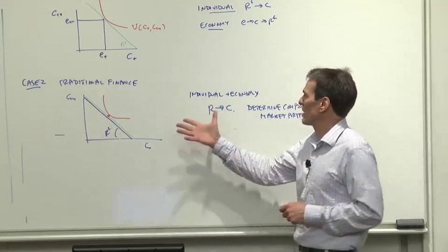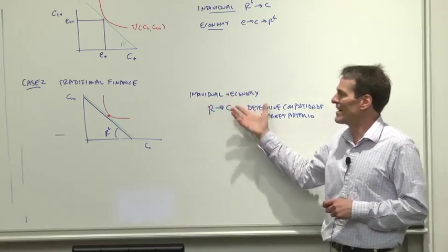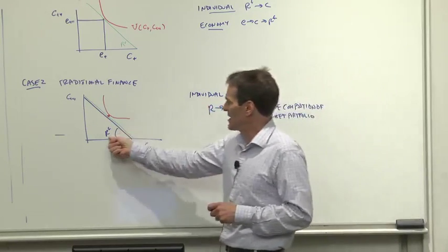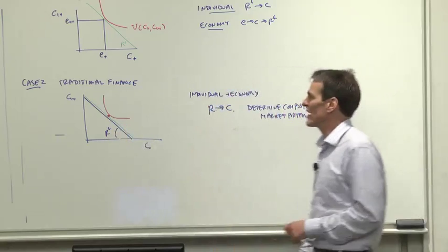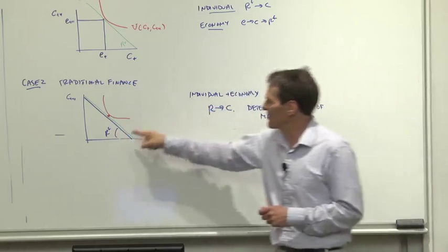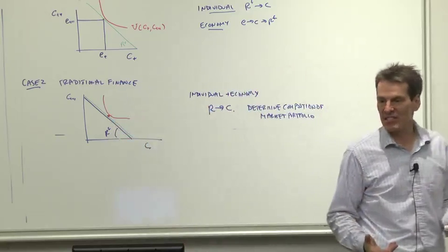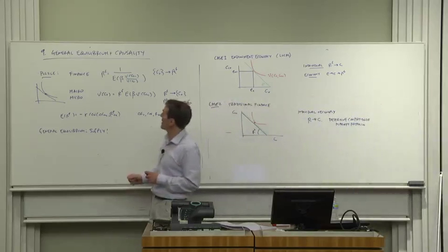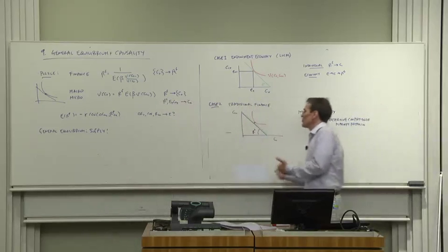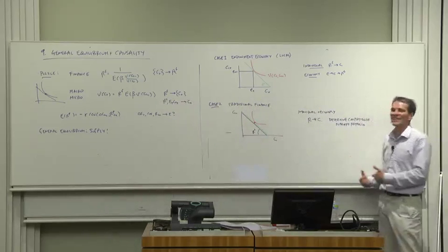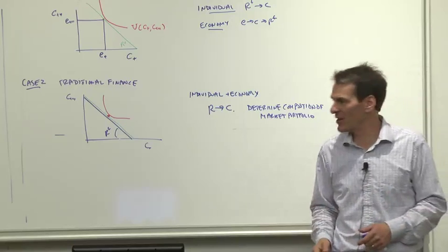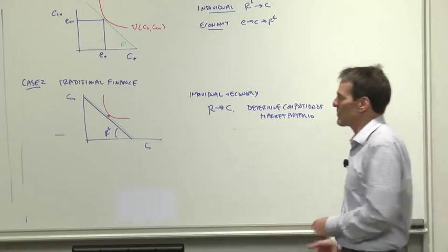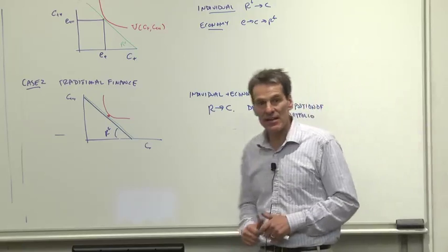So if that were the general equilibrium, then both for the individual and the economy, the interest rate would be the exogenous thing. The consumption growth today and tomorrow would be the endogenous thing. And the function of our equation, our p equals e of mx, would be, in fact, determining consumption, determining the composition of the market portfolio, rather than determining asset prices in a true exogeneity fashion.